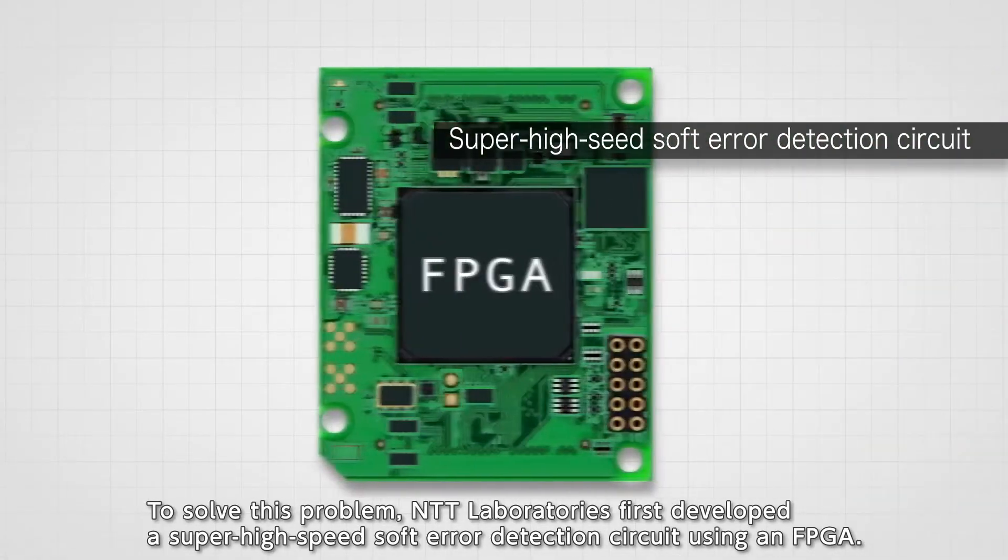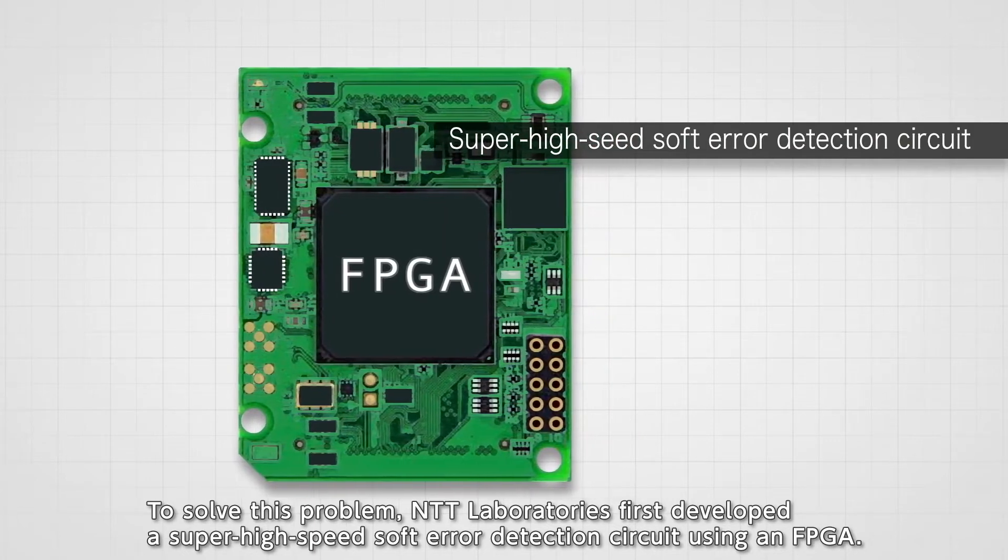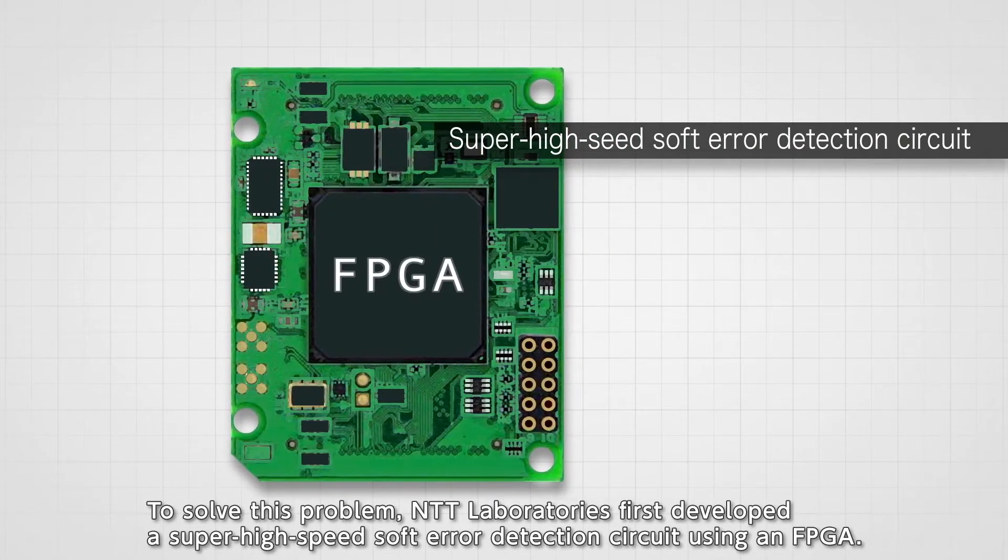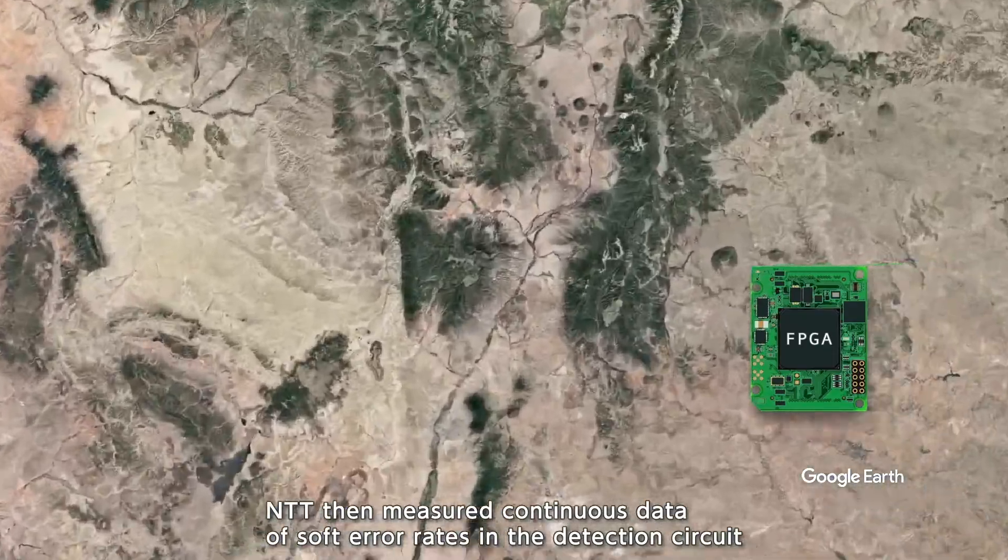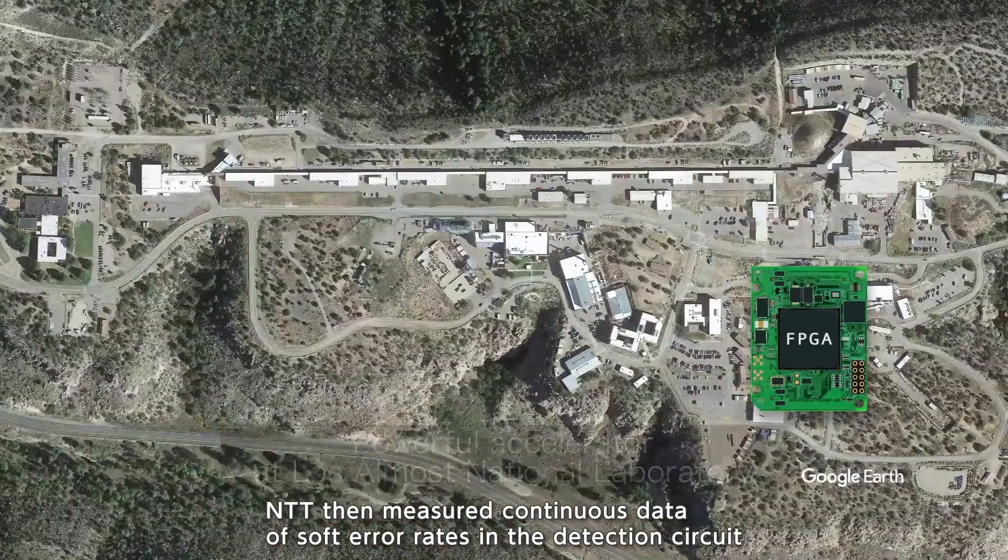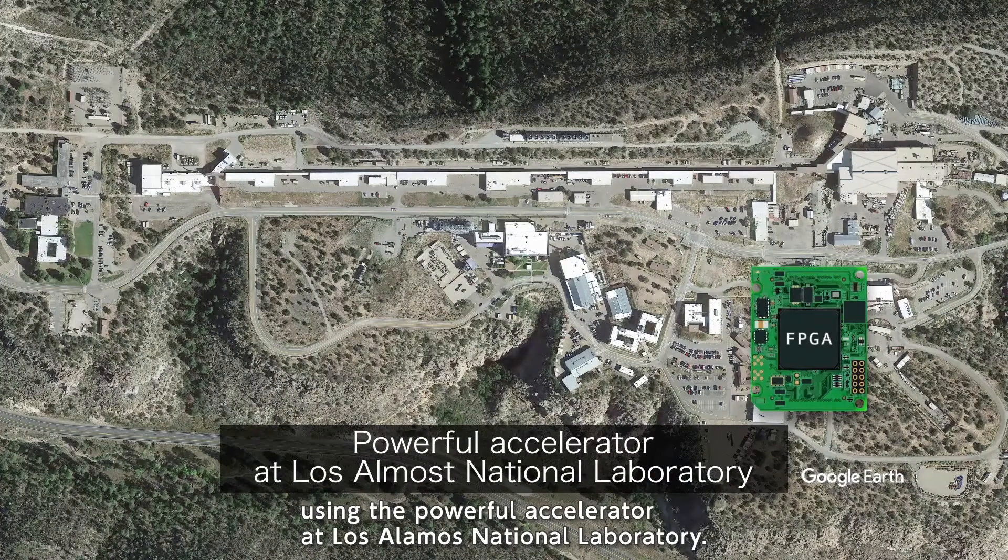To solve this problem, NTT laboratories first developed a super high-speed soft error detection circuit using an FPGA. NTT then measured continuous data of soft error rates in the detection circuit using the powerful accelerator at Los Alamos National Laboratory.